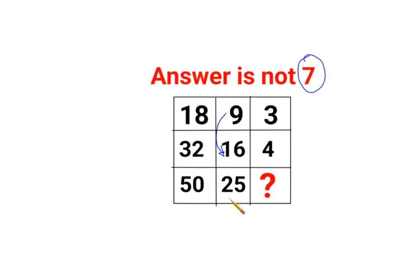9 plus 16 gets you 25. 18 plus 32 gets you 50. So yes, 7 should be the answer.